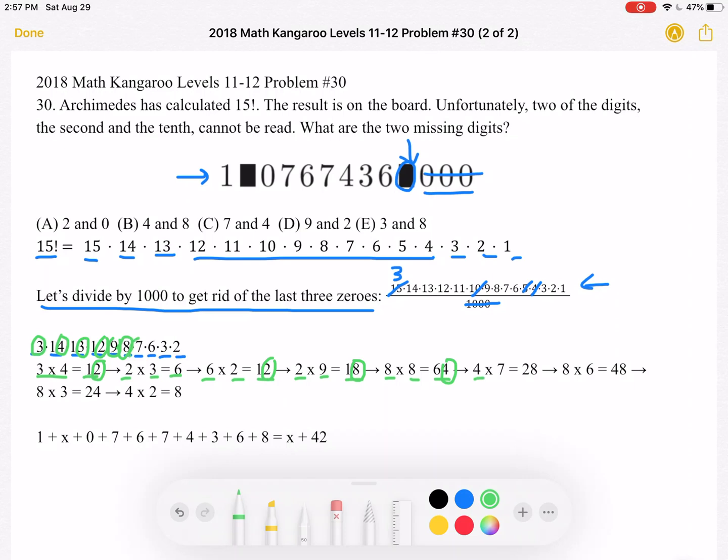4 times 7 equals 28, we only take the 8. 8 times 6 equals 48, we only take the 8. 8 times 6 equals 48, we only take the 4.